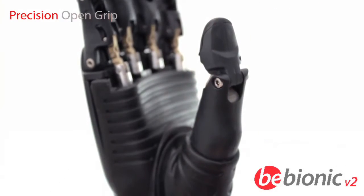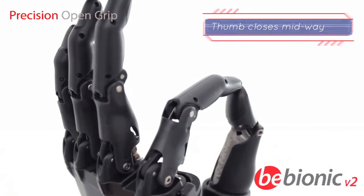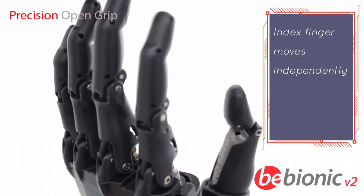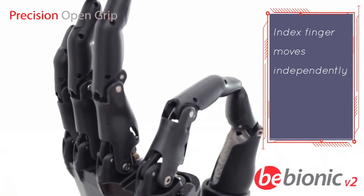In precision open grip, the middle, ring, and little fingers stay open. The thumb closes part way and the index finger moves independently to pick up small objects quickly and accurately.